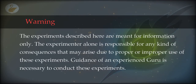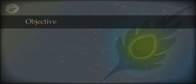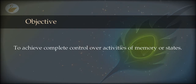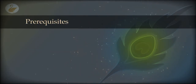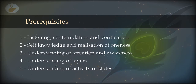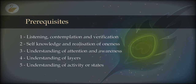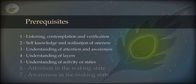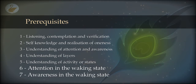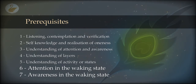You must have already finished watching the parts on experiments of the waking state. Now we are going to move to the next major state, which is the dreaming state, and let us see what experiments we can perform in this state. Here is the warning: you are responsible for whatever you do and in whatever ways you apply this information. The objective, once again, is complete control over the activities of memory in the dreaming state — same objective as in the waking state.